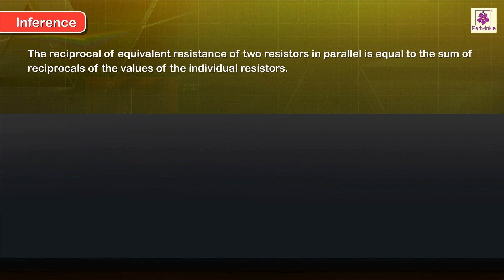In principle, the reciprocal of the equivalent resistance of two resistors in parallel is equal to the sum of the reciprocals of the values of the individual resistors. That is, 1 upon Rp is equal to 1 upon R1 plus 1 upon R2.